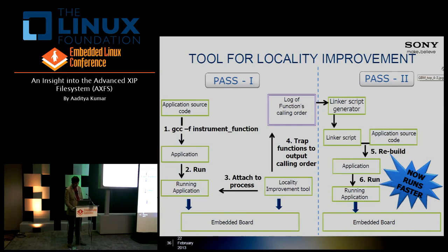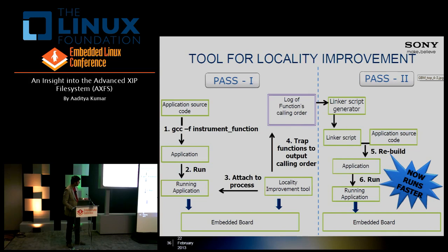Here is a description of the tool. For any application, you compile it with the GCC instrumentation option. The application is run and our tool attaches to it, wraps the function calls, and outputs a log of the calling order of functions. This log is given as input to a linker script generator script, which produces a linker script. You then rebuild the application and it will run faster.